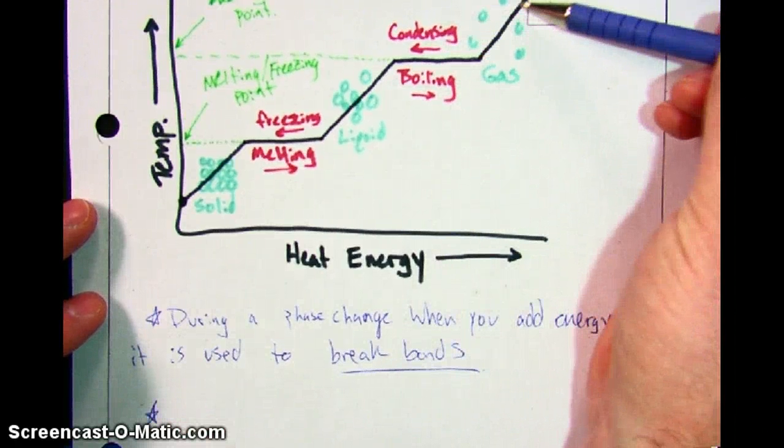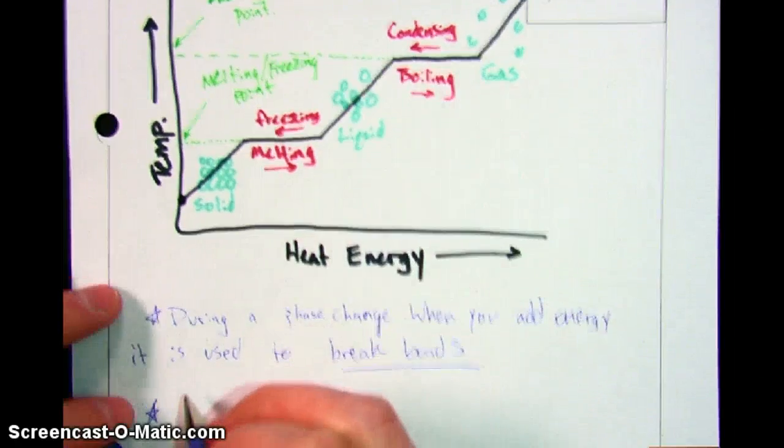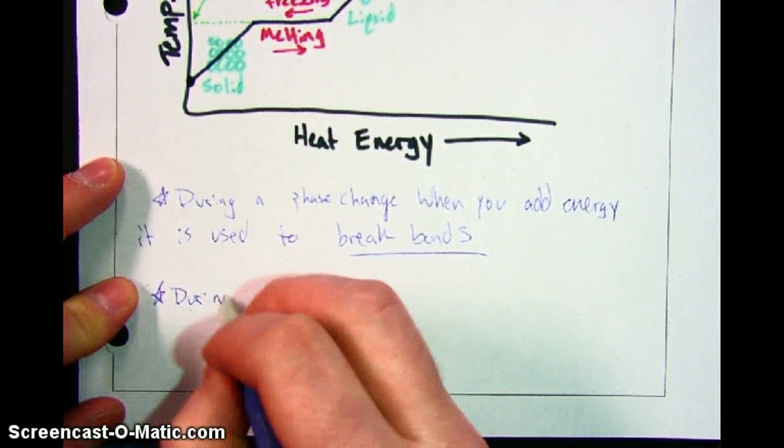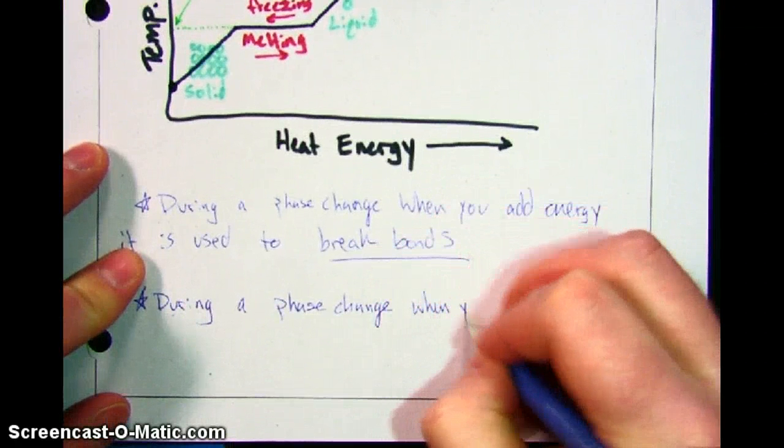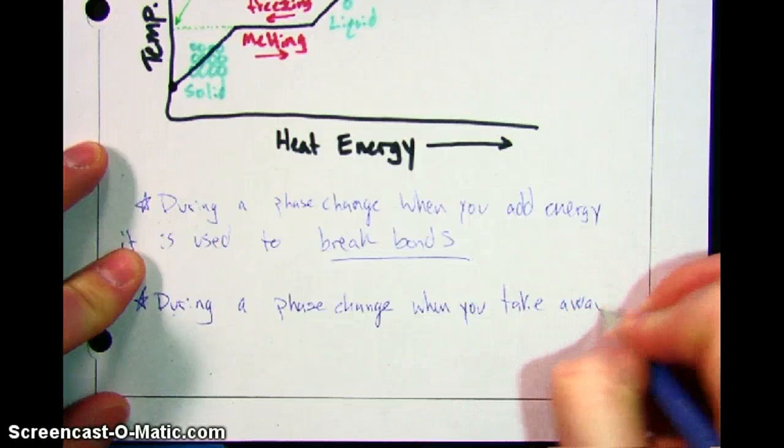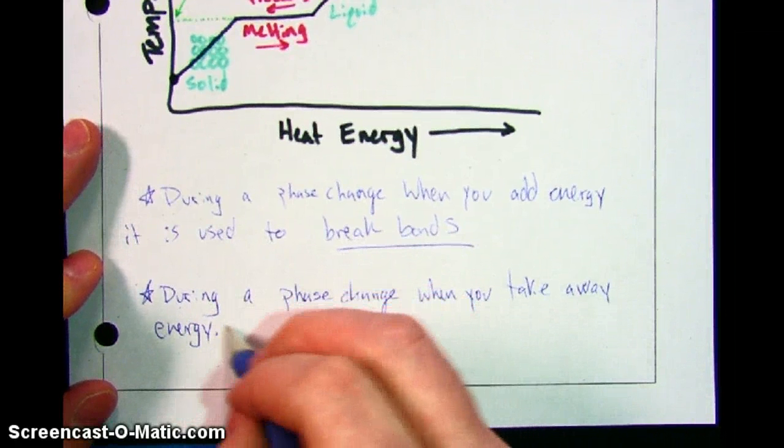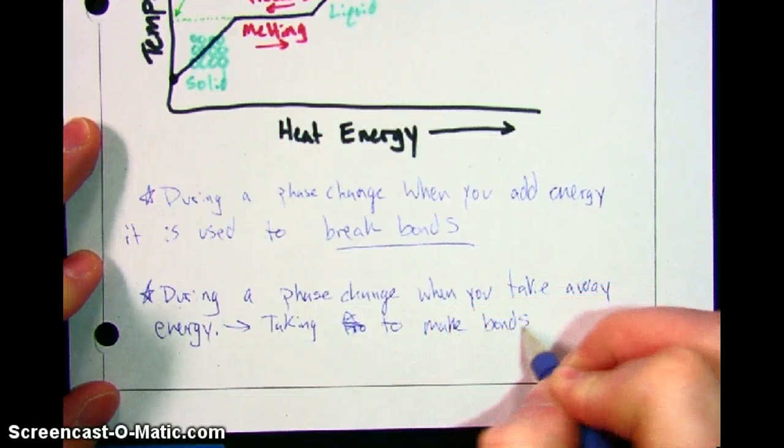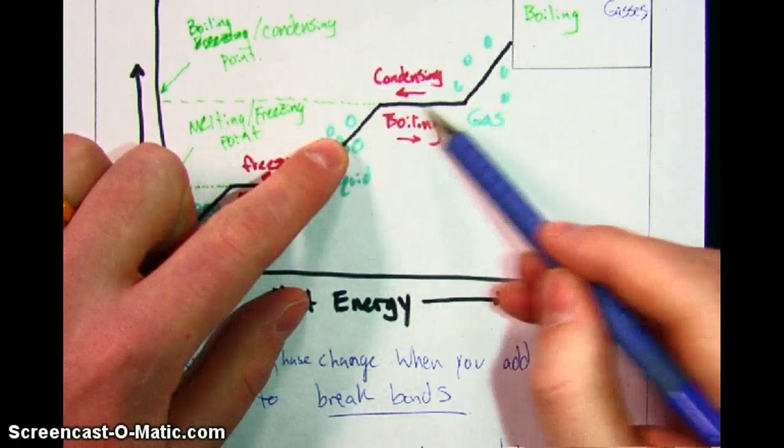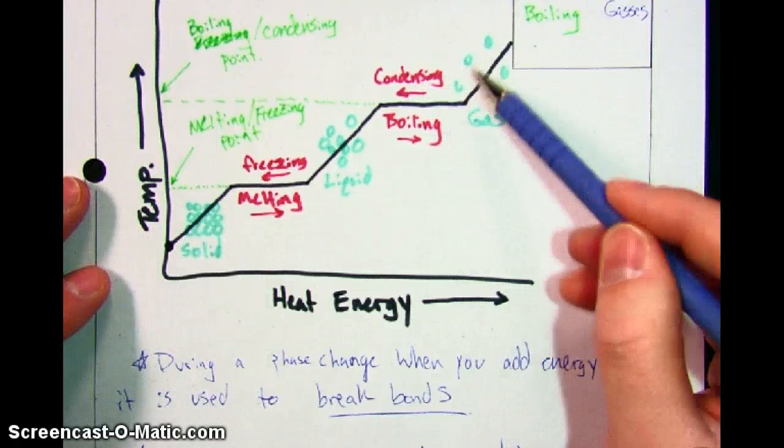Well, when you're going backwards on this graph, if you're starting with something with a high amount of energy, like a gas, and you start taking away the energy, the reason why condensing is also a flat line is because of this. During a phase change, when you take away energy, what's happening is you're taking that energy in order to make bonds. So this one's a little bit harder to conceptualize for me, maybe it is for you too, but if you're going from a gas down to a liquid, the reason why this flat spot happens here, there's no temperature change, is because you're actually taking away the energy from these molecules' ability to stay apart.